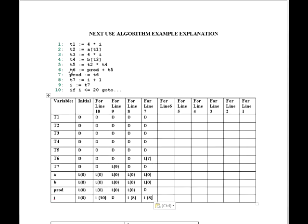For line number 6: prod is live and T5 is live. So we put T5 as live on line number 6, and we also put L6 on prod. T6 is dead, so we put D on T6. The rest of the values will be the same as line number 7.